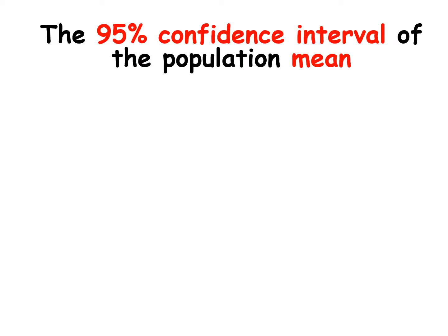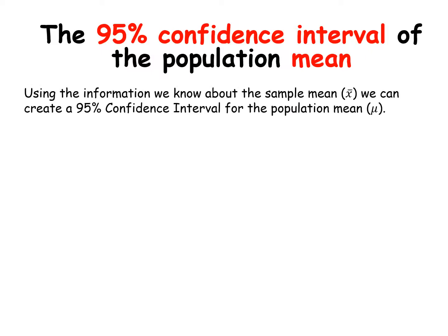So let's talk about the 95% confidence interval of the population mean. I've highlighted the word 'mean' because there are two confidence intervals, so just be really clear that this time we're talking about the mean. Using the information we know about the sample mean x-bar, we can create a 95% confidence interval for the population mean mu.